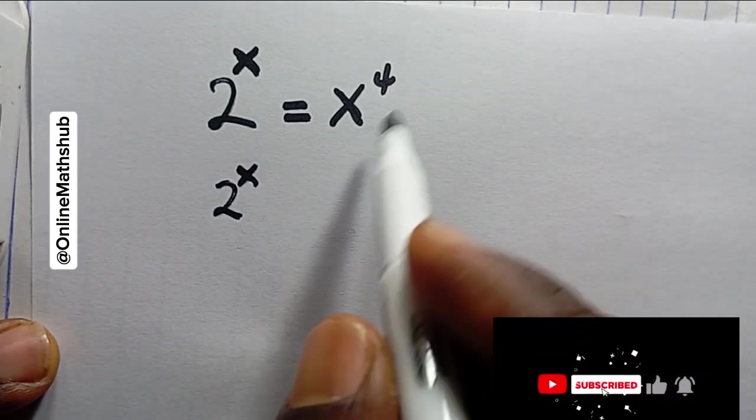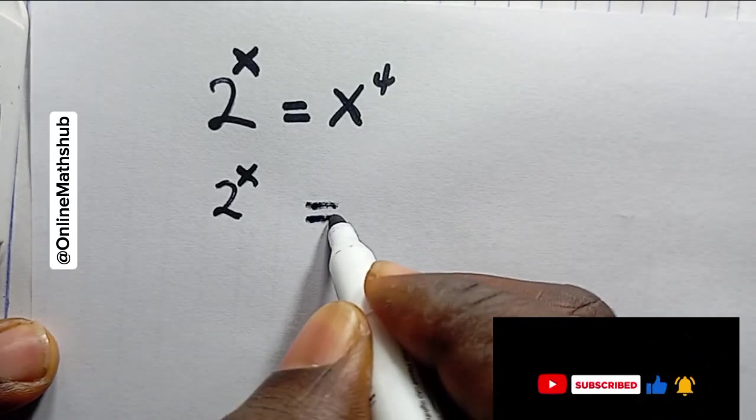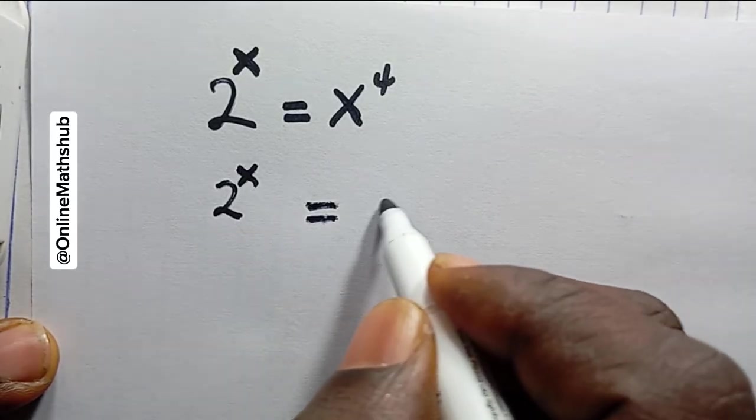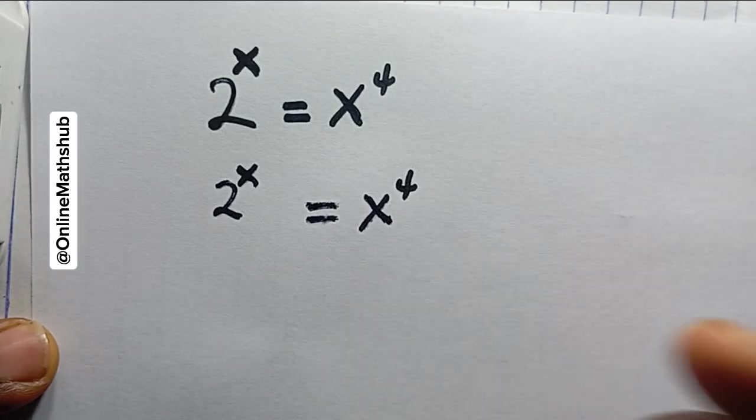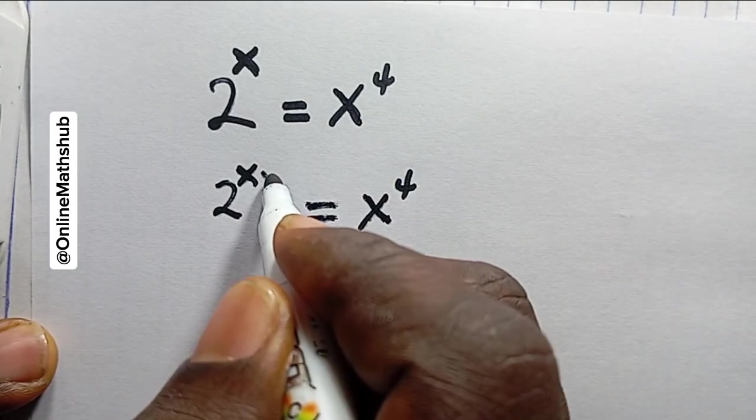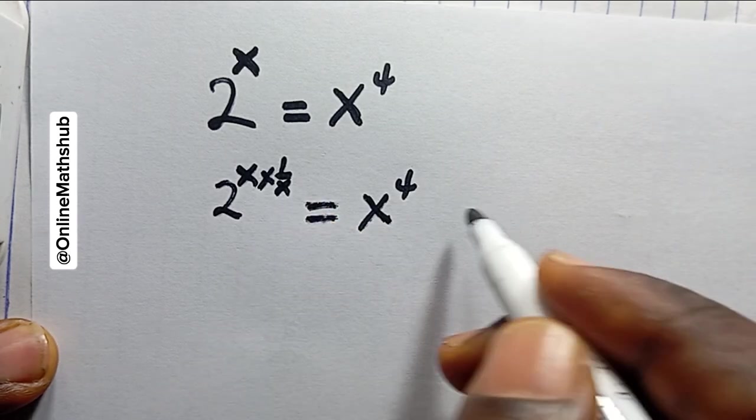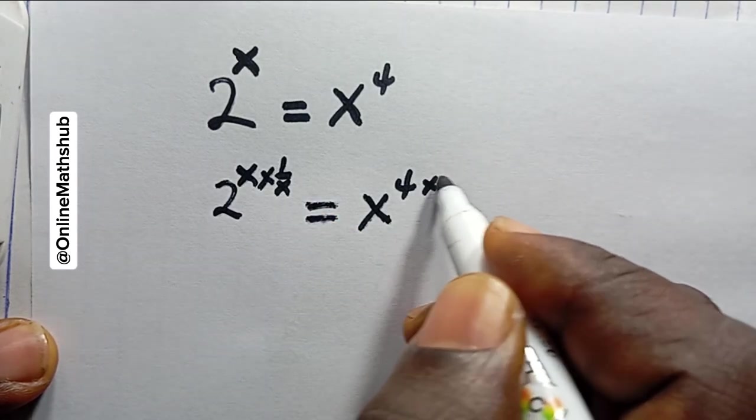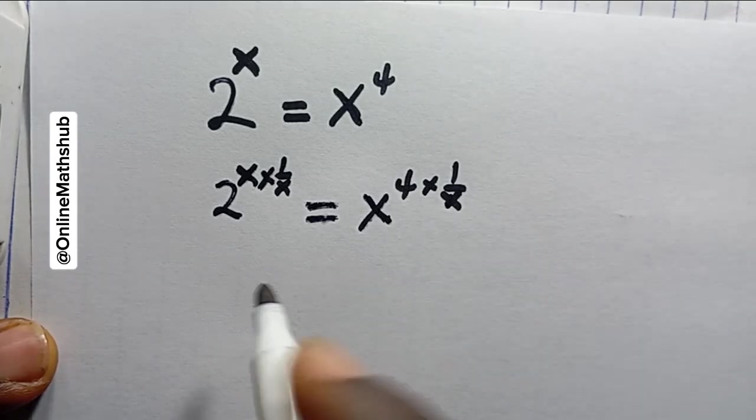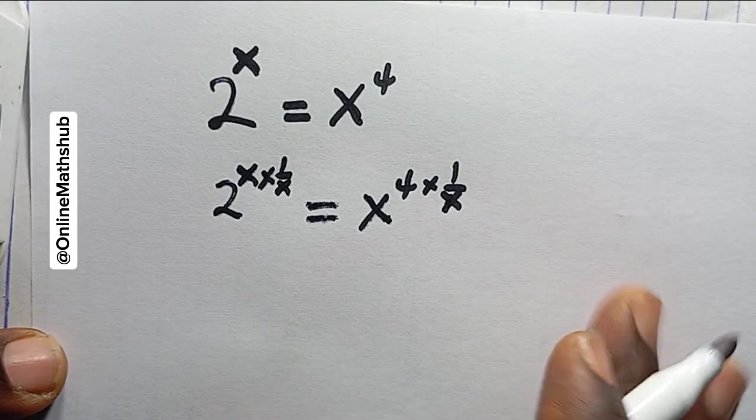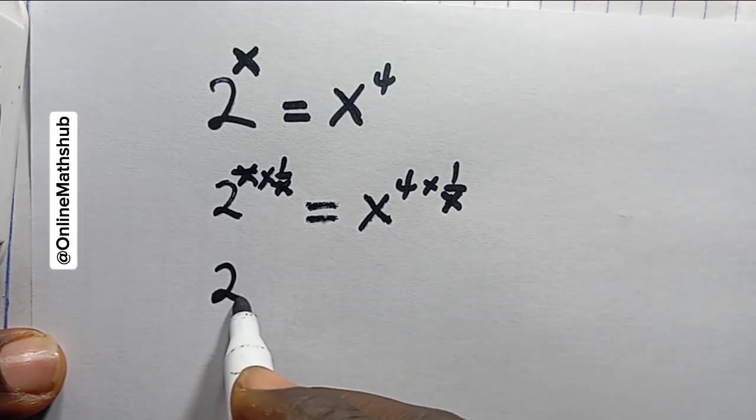What I'm going to do is find a way to remove these powers I have right here. I have power x over here and power 4 over here. How do I remove that? I can multiply this side by power 1 over x and do the same here. If I evaluate, this is going to cancel this, and I'm left with 2^(1/1) equals x^4 divided by x.